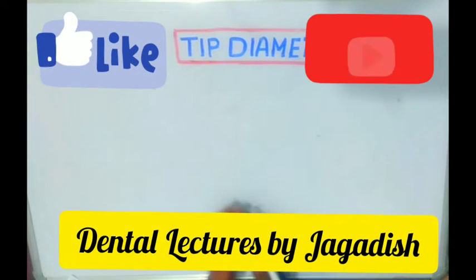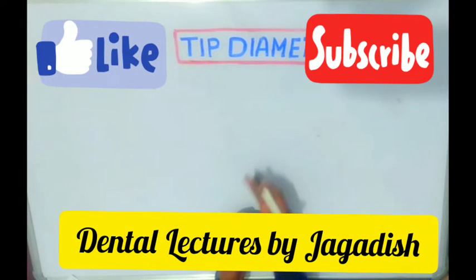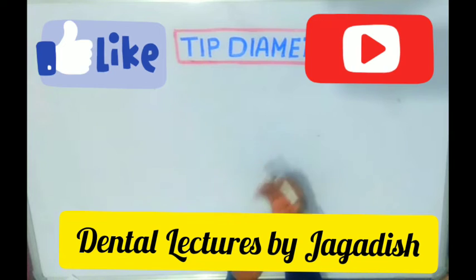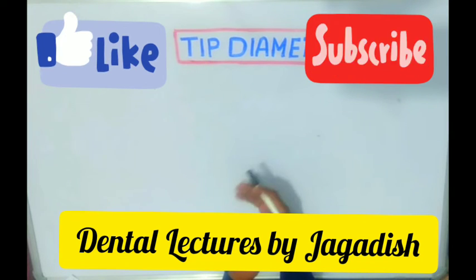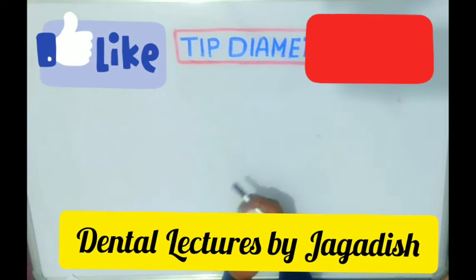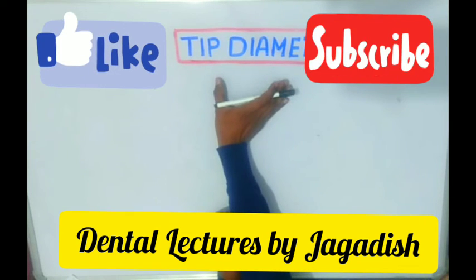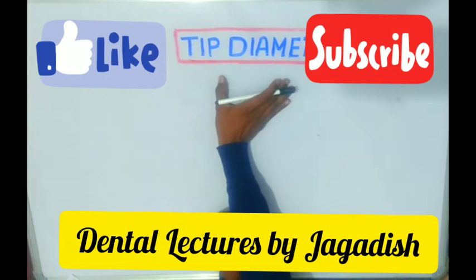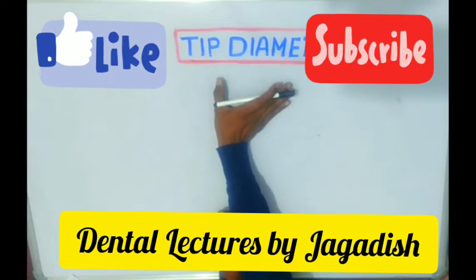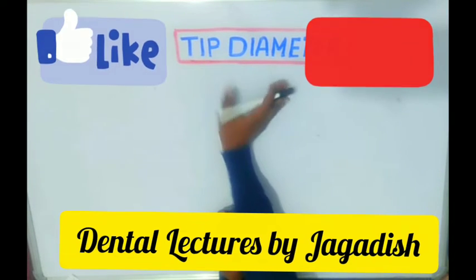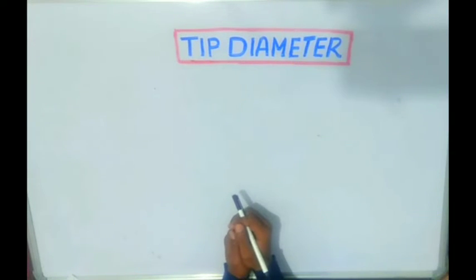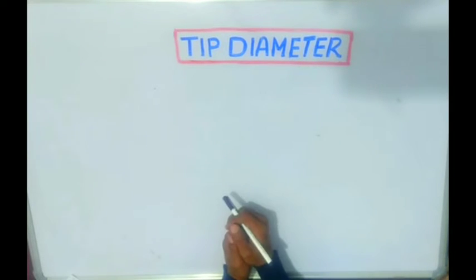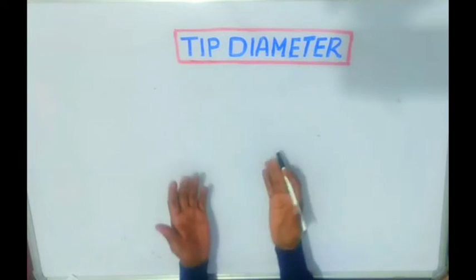Hi, pleasure meeting you all. This is Jagdish from Dental Lectures. In continuation with the previous session on color coding, today we are going to discuss about the tip diameter of various endodontic instruments, especially 2%, 4%, and 6% files. What exactly is tip diameter? So let's start the session.